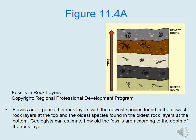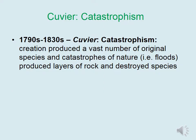Geologists can estimate how old fossils are according to the depth of the rock layer. As the 1700s progressed into the 1800s, the French scientist Cuvier proposed the idea of catastrophism — which basically has the word catastrophe in it. He stated that creation produced a vast number of original species, and catastrophes of nature such as floods produced layers of rock and destroyed species, which is why you see extinct species in certain layers of rock.